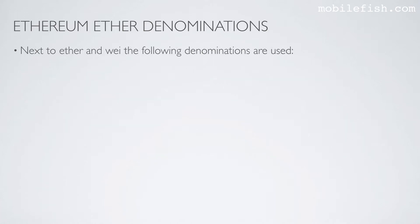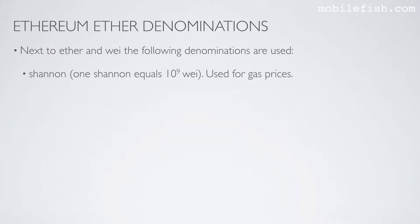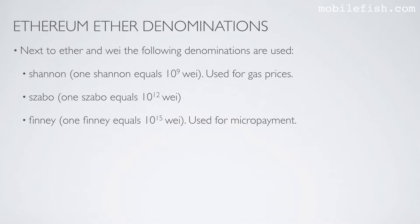Next to Ether and Wei, the following denominations are used. Shannon: one Shannon equals 10 to the power of 9 Wei, and is often used to indicate gas prices. Szabo: one Szabo equals 10 to the power of 12 Wei. Finney: one Finney equals 10 to the power of 15 Wei, and is often used in micropayments.